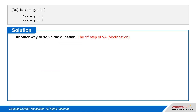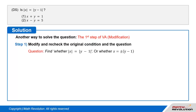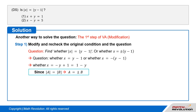Another way to solve this question — a better solution closer to the standard variable approach. The answer is determined by the modification in the first step. If you build up your skills, you can solve questions more rapidly and accurately. We have to find out whether the absolute value of x equals the absolute value of y minus 1. This can be written as x equals y minus 1, or x equals negative of y minus 1, which equals 1 minus y. Since the absolute value of A equals the absolute value of B means A equals positive or negative B.